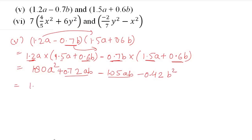Combining like terms: 1.8a² remains. For ab terms: 0.72 - 1.05 = -0.33ab (since 1.05 is the greater number, the result is negative). Final answer: 1.8a² - 0.33ab - 0.42b².